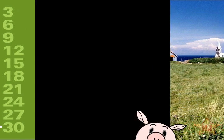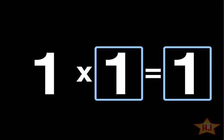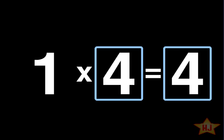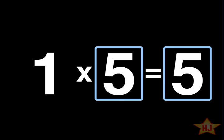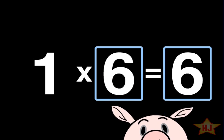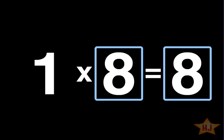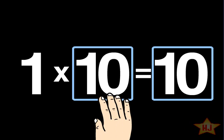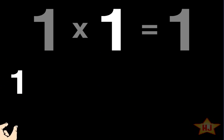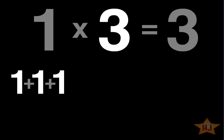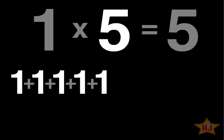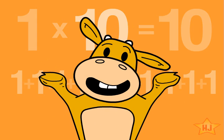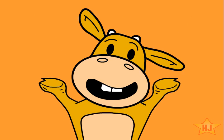1 times any number equals that number. You see, multiplying is simply taking a number and adding it to itself however many times you need. If you want to see something cool,